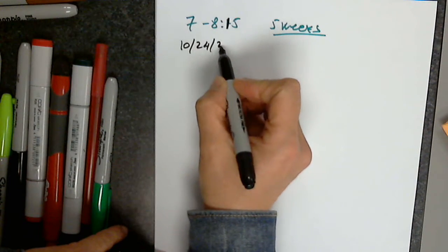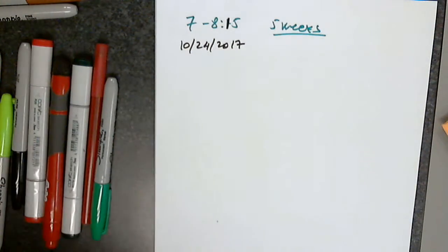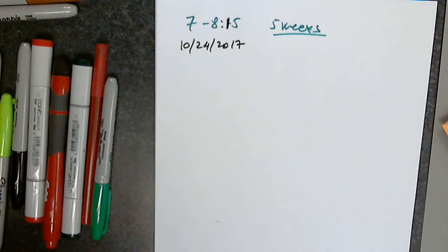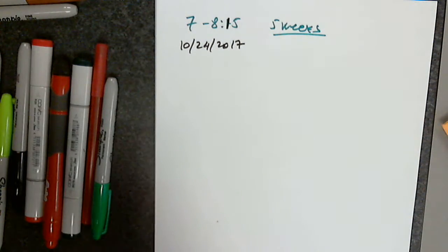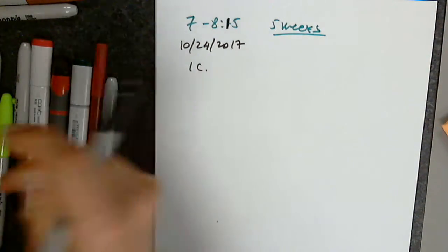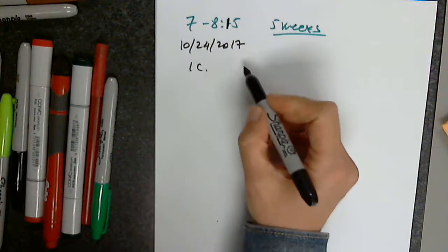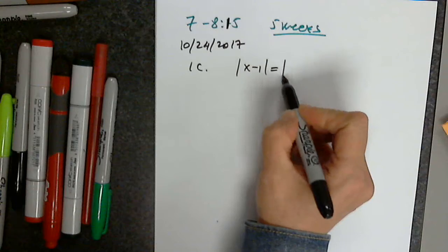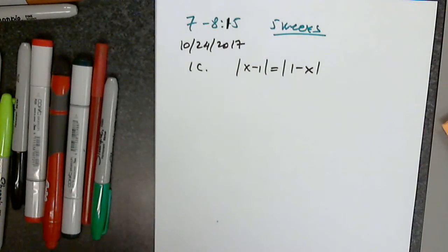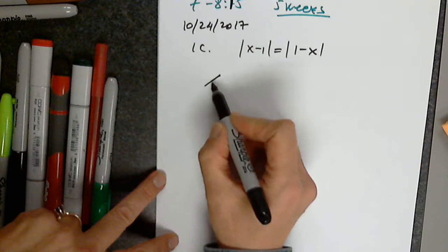First question: anything on the test that you would like to see? I will pose solutions. Which problem? 1c? Okay, so in 1c, we have the absolute value of x minus 1 equals 1 minus x. In this case, we have to write two situations.